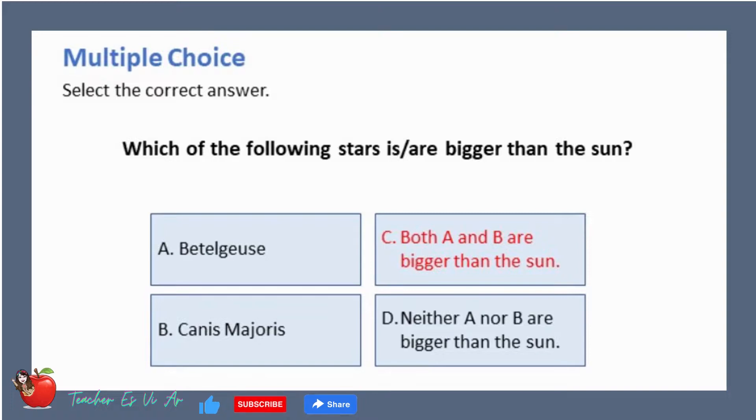The correct answer is C. Both Beetlejuice and Canis majoris are bigger than the sun.